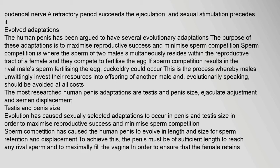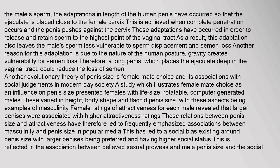The most researched human penis adaptations are testis and penis size, ejaculate adjustment, and semen displacement. Evolution has caused sexually selected adaptations to occur in penis and testis size in order to maximize reproductive success and minimize sperm competition. The penis must be of sufficient length to reach any rival sperm and to maximally fill the vagina. The adaptations in length have occurred so that the ejaculate is placed close to the female cervix. A long penis which places the ejaculate deep in the vaginal tract could also reduce semen loss due to gravity.